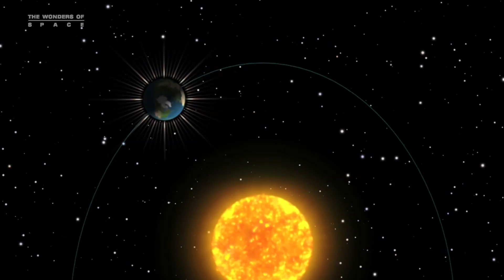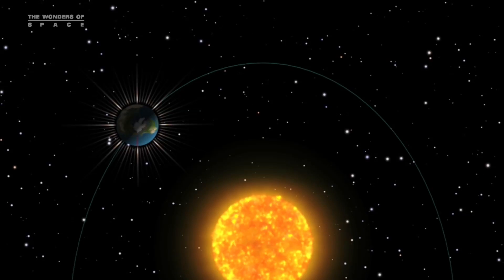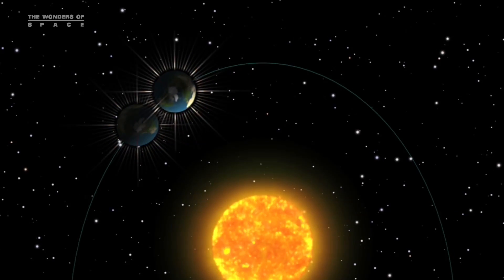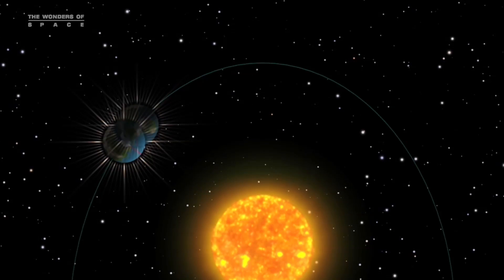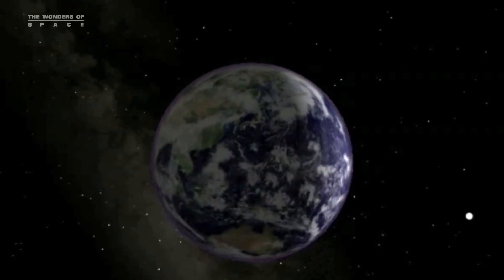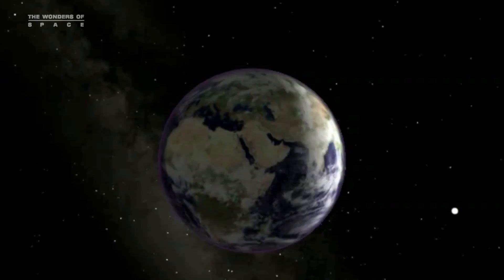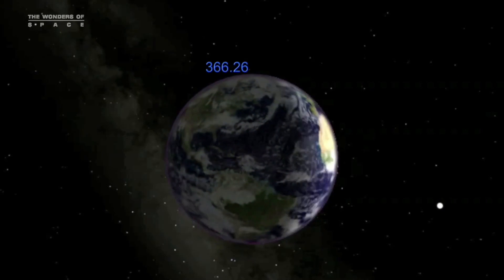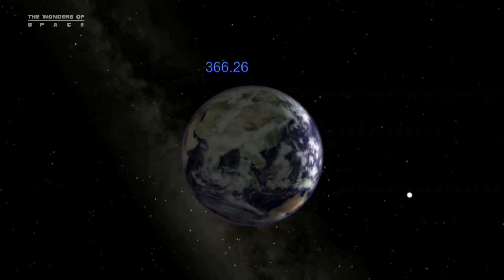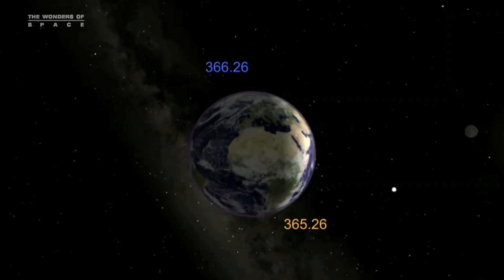The 360 degree rotation is called a sidereal day, while the noon to noon rotation is called a solar day. Earth orbits the Sun once for about every 366.26 sidereal days and once for every 365.26 solar days.